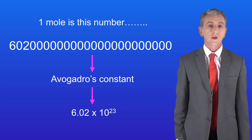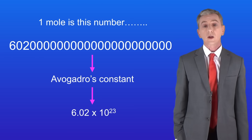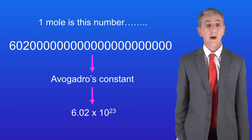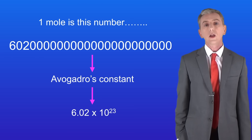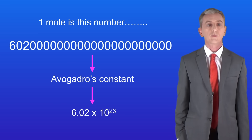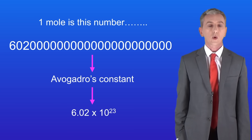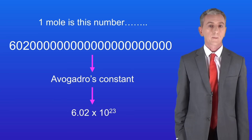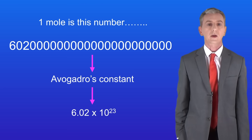In the last video we saw that one mole is also called Avogadro's constant and it has a value of 6.02 times 10 to the power of 23. We learned how to calculate the number of atoms in a given number of moles of molecules. In this video we're going to take this one stage further and learn how to calculate the number of atoms in a given mass of a chemical.